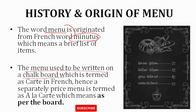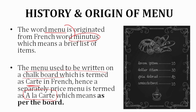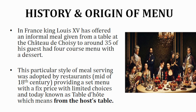In early France, restaurants used to write their menu on the chalkboard to let customers know what items were available with their prices. These separately priced items were termed as 'carte,' and this carte is a term discussed in the classification of menu. It later became a type of menu known today as 'à la carte.' The literal meaning of à la carte is 'as per the board.'